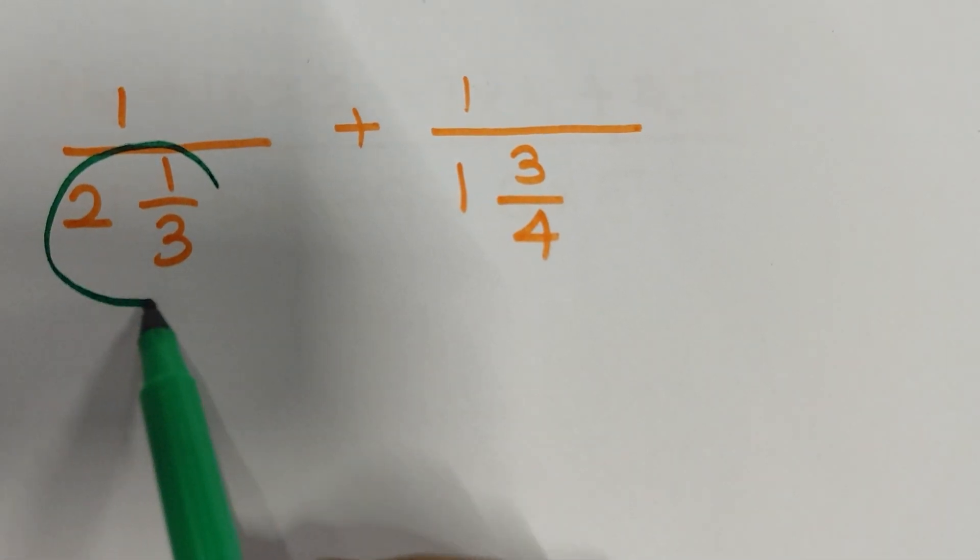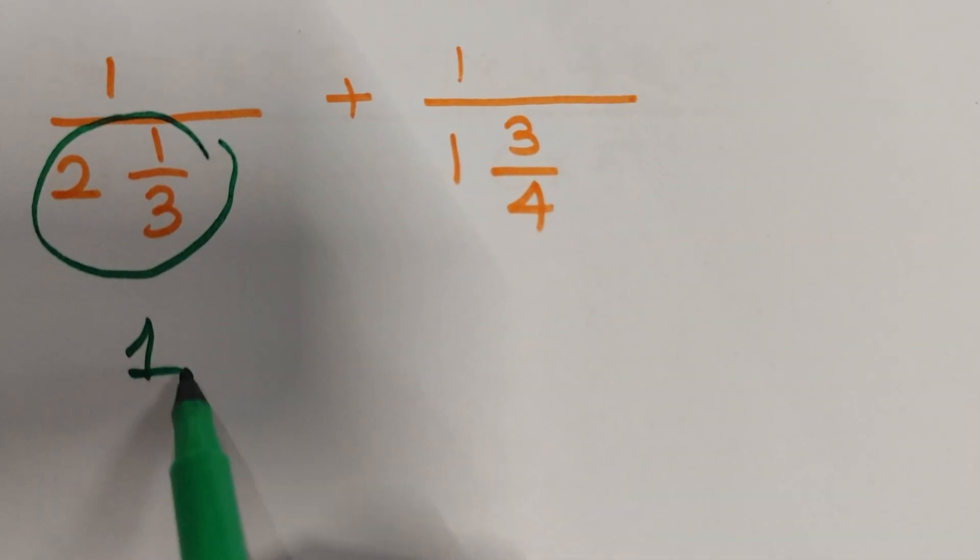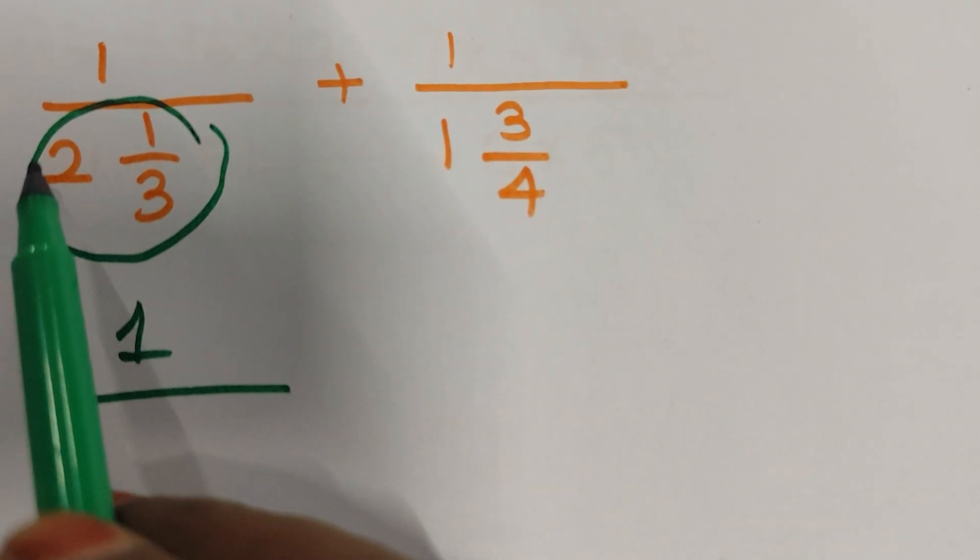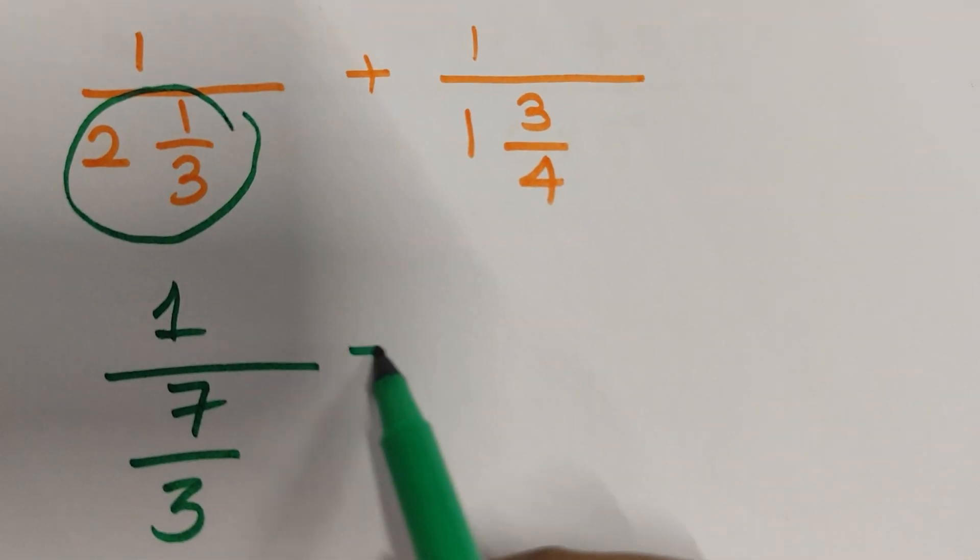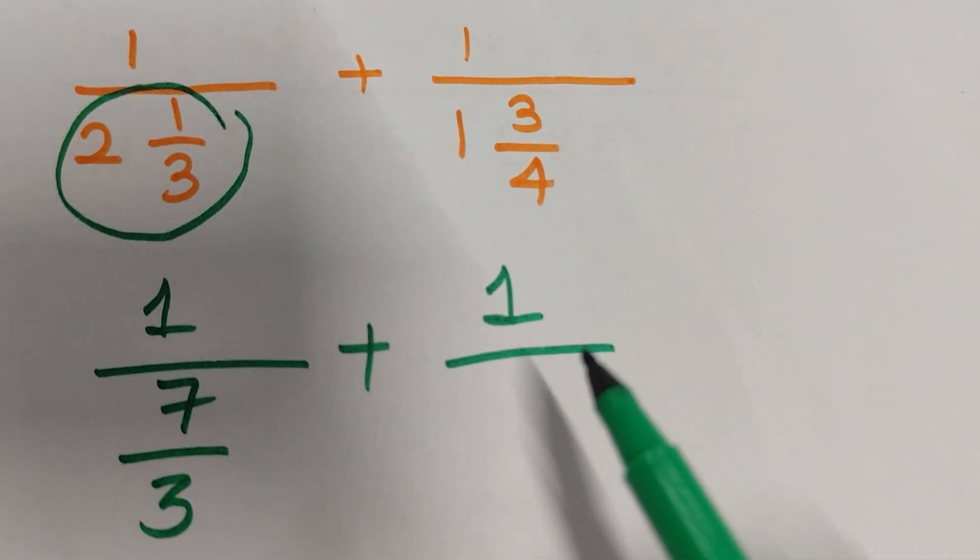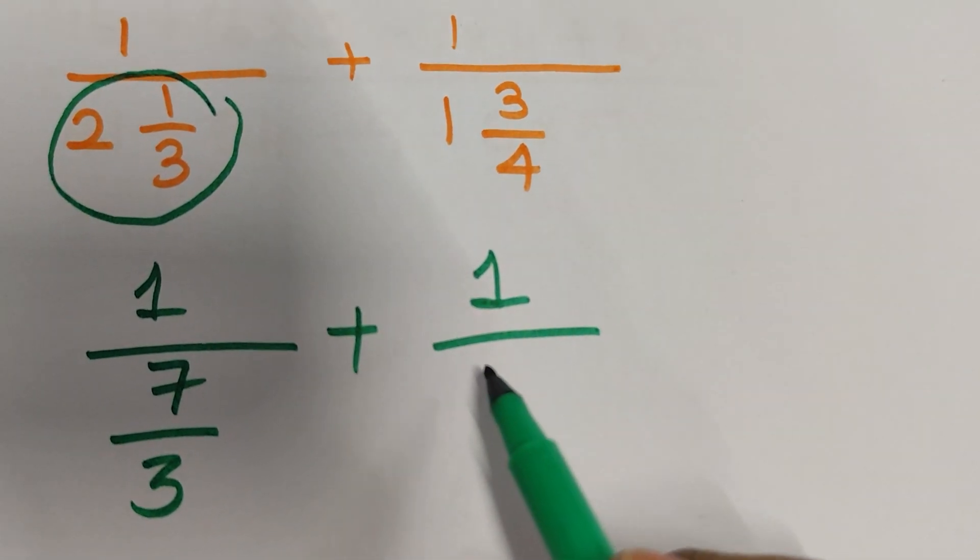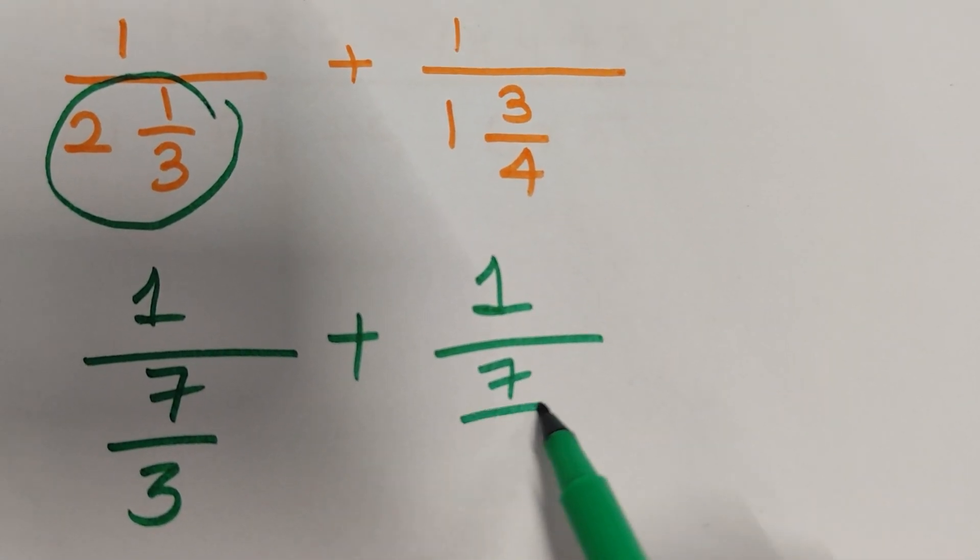First convert into improper fraction. So 2 and 1/3: 2 times 3 is 6, 6 plus 1 is 7/3. Plus 1 and 3/4: 1 times 4 is 4, 4 plus 3 is 7/4.